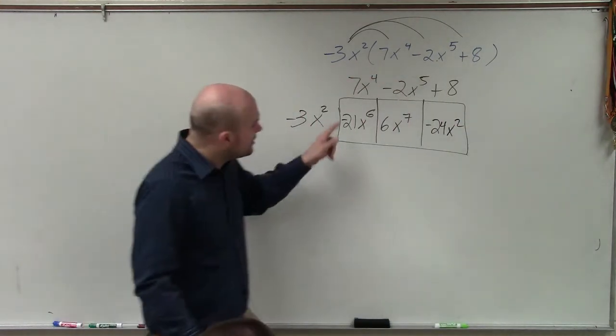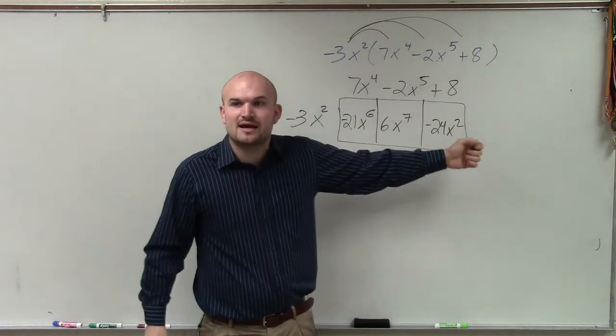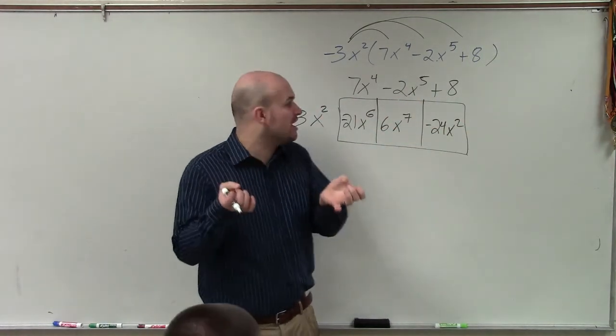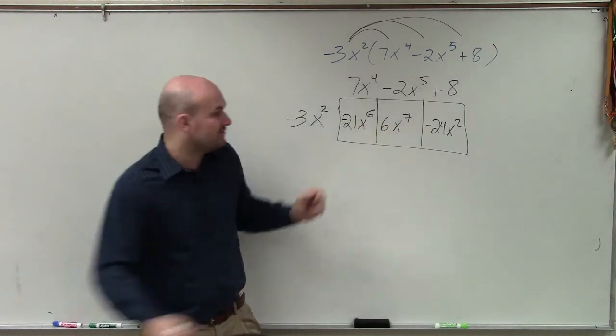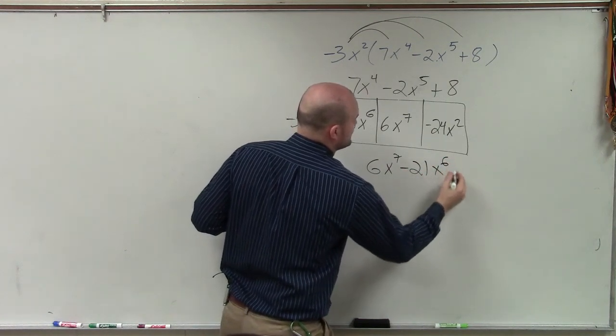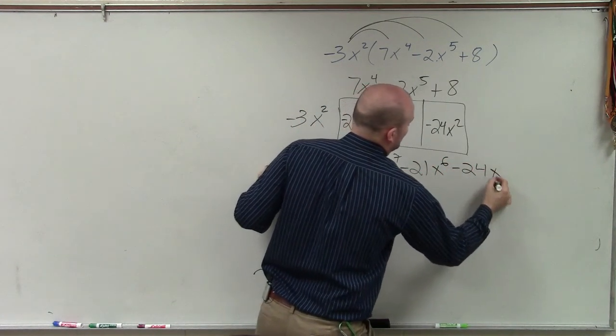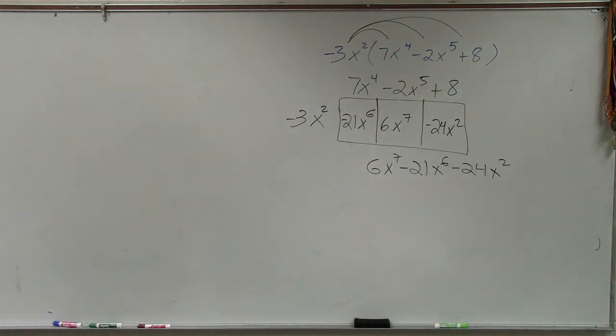So now, I have found the area of each of these boxes. So if I want to rewrite the area of the whole box, I want to write it, but I want to make sure I also write it in descending order, meaning with the largest exponent first. So I'd have 6x to the seventh minus 21x to the sixth minus 24x squared. Make sure when you do your multiplication that you rewrite it in descending order.